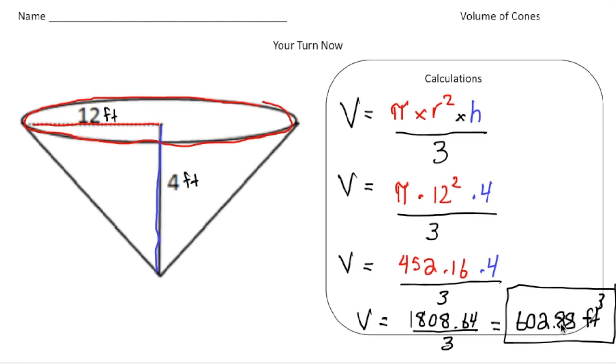The big thing to remember: to find the volume of a cone, it's the area of the base times the height, divided by 3. How'd you do?